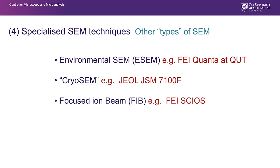A focused ion beam, or FIB — we have one of these at CMM. This is where we use a gallium ion beam and other processes to erode samples away. It may also have a cryogenic addition in the future.